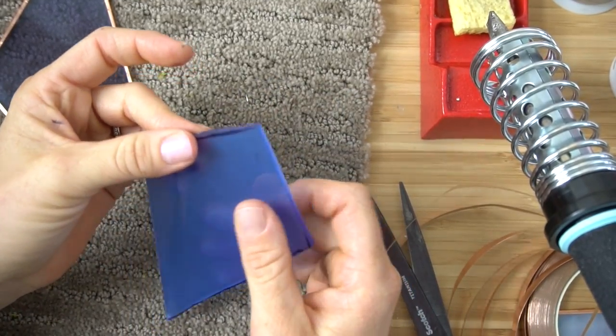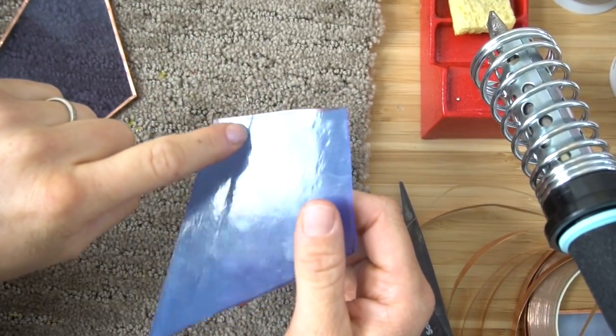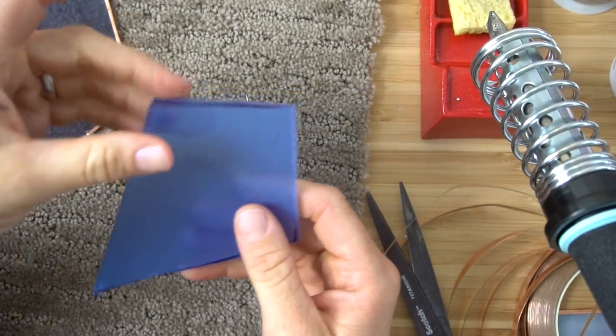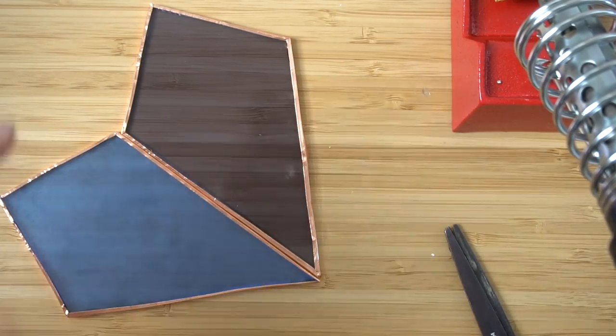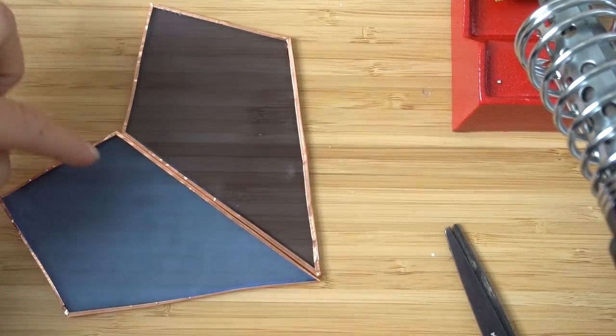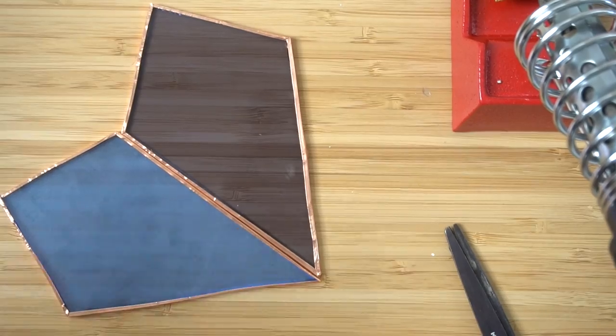I don't have Windex out in my studio, but you should clean off your pieces before you do this. Clean off the Sharpie. Normally I would have the whole piece together, but you're going to do this same thing around the whole piece.